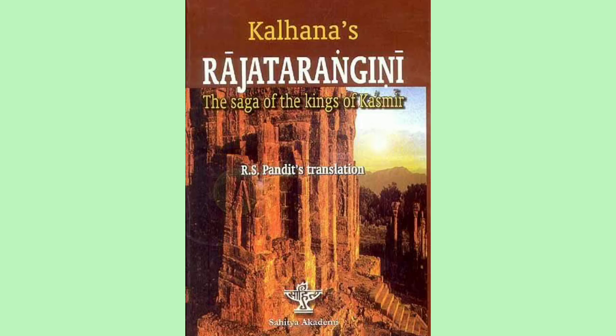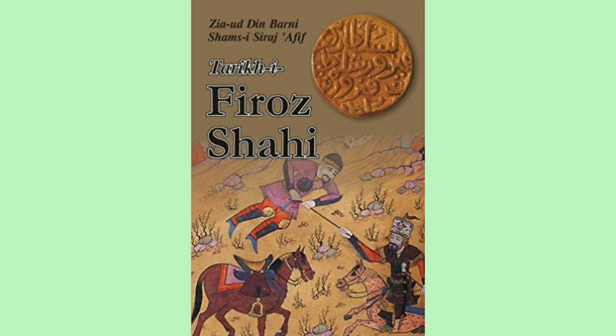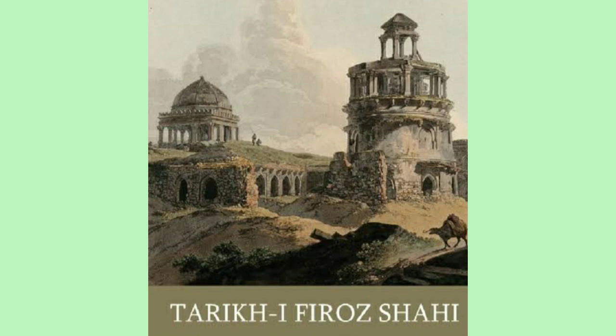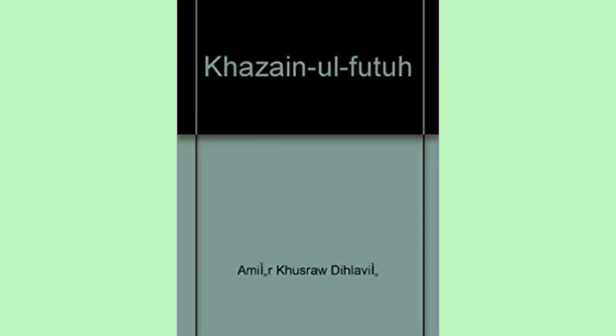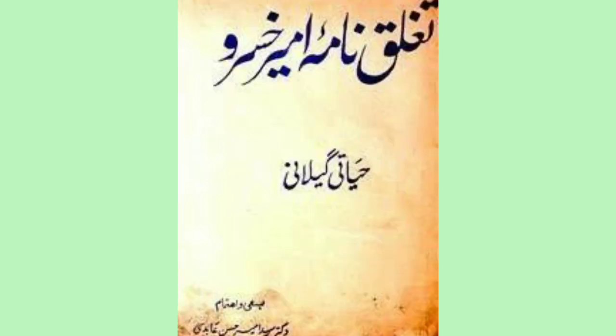Some common examples: Raj Tarangini by Kalhana, which was a literary source depicting the kings of Kashmir. Second, Tariq-e-Firoz Shahi by Ziauddin Barney, which comprises the history of the Sultans of Delhi. Third, Khazayal-Futu and Tughlaq Nama by Amir Khusro. These are some of the important articles from the medieval period.